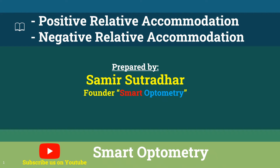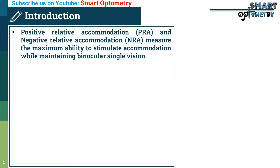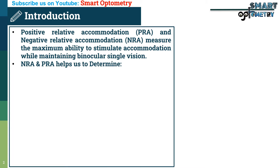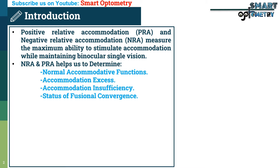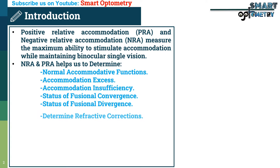Today I will discuss positive relative accommodation and negative relative accommodation. PRA and NRA measure the maximum ability to stimulate accommodation while maintaining binocular single vision. They help us determine normal accommodative function, accommodation excess, accommodation insufficiency, status of fusional convergence, status of fusional vergence, and determined refractive corrections.